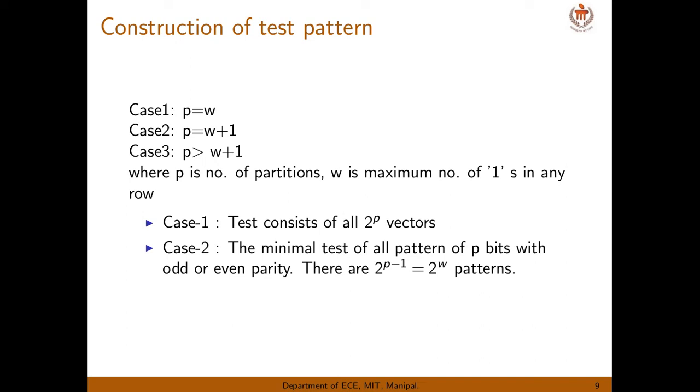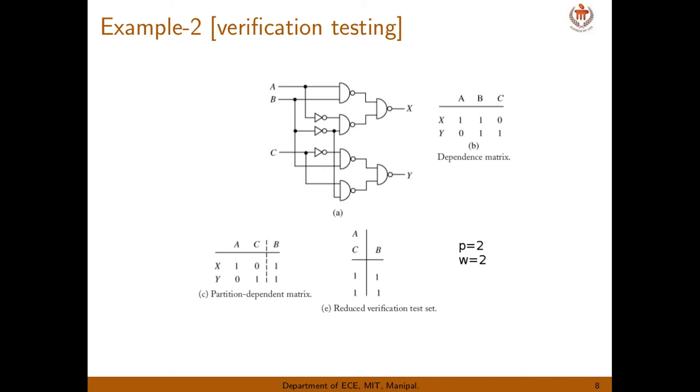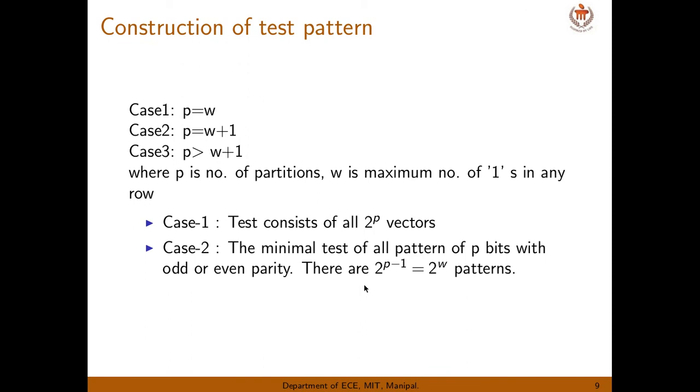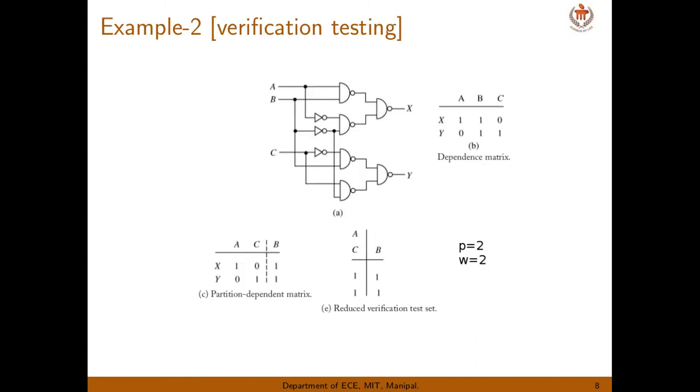Case 1: P equal to W. P equal to W means that is the previous set. In the example, P equal to W. So how many number of test vectors required? That is given by 2 power P vectors. So P is 2, 2 power 2 is 4. So you want to do pseudo exhaustive testing here, you can have only 4 vectors. What are those 4 vectors?